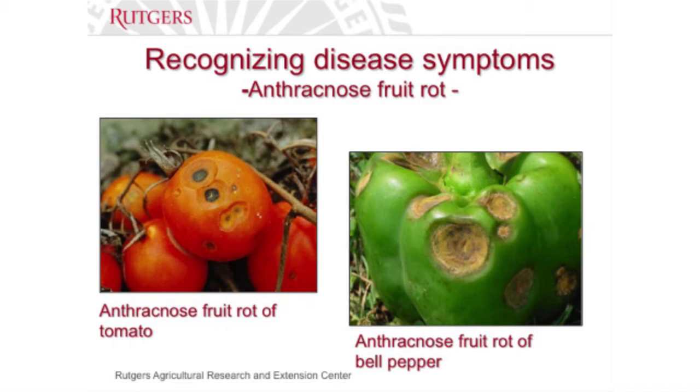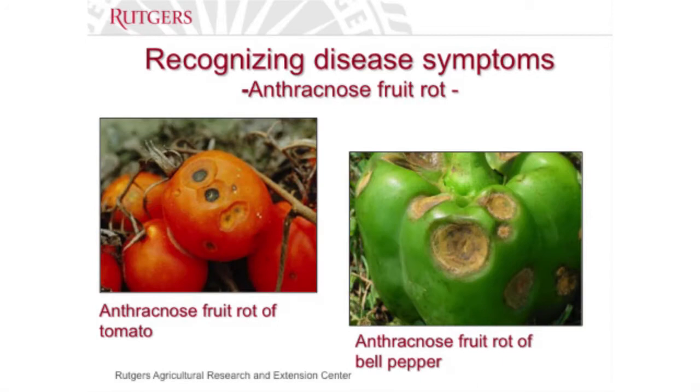Unfortunately, the same pathogen that infects tomato can also infect pepper. Unlike tomato, as soon as a spore lands on pepper fruit, infection occurs right away. On pepper you can see a pinkish-orange mass — those are all spores. There are literally billions of spores in one spot. The next time you overhead water or rain comes through, those spores are going to be splashed around on the peppers or tomatoes, and then you're going to have more lesions.